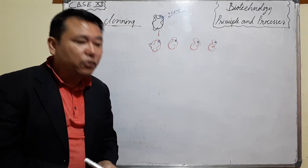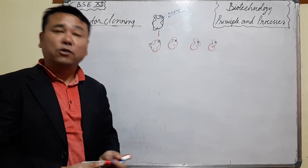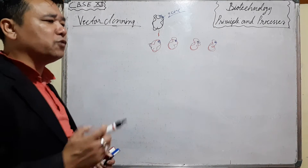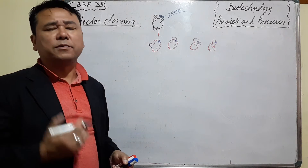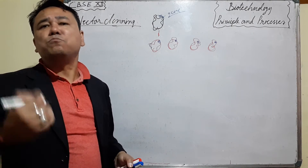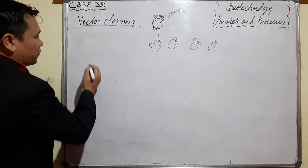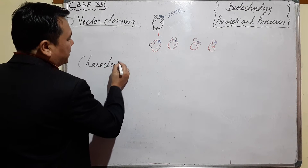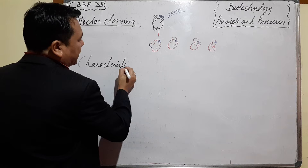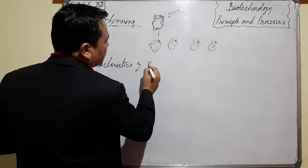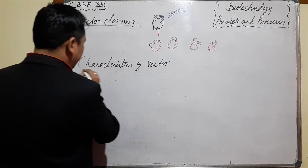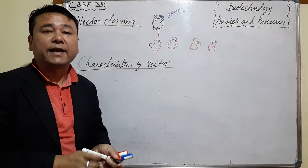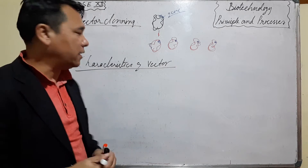So before we start vector cloning, first we have to know the features that a vector must have. We have to study the characteristics of a vector.